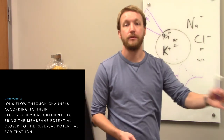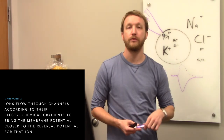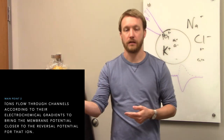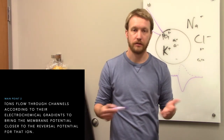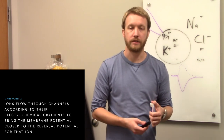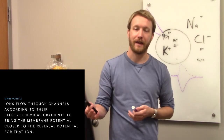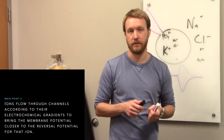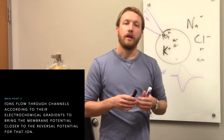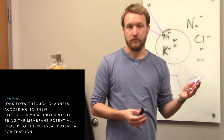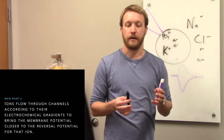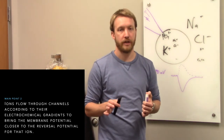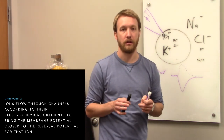Ions can move across the membrane through channels, carriers, or pumps. Pumps go against the concentration gradient and are the slowest, moving hundreds of ions per second. Carriers are faster, moving hundreds of thousands of ions per second. Channels are the fastest, moving hundreds of millions of ions per second. So when you see big currents, it has to be a channel — they're the only ones with the bandwidth to generate a measurable current. You can get some transporter currents, but they're small and you've really got to work for them.